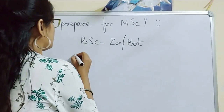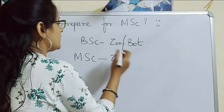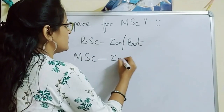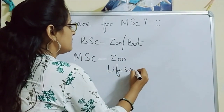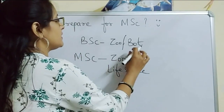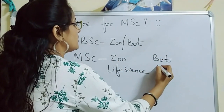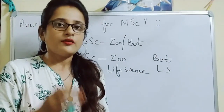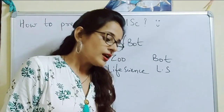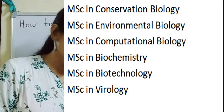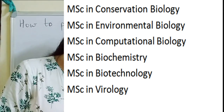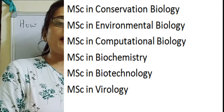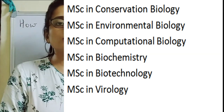If you have done BSc in geology, you can do MSc in geology or life science. Similarly, if you have done BSc in botany, you can do MSc in botany or life science. Apart from these classical subjects, there are many other options such as MSc in conservation biology, environmental biology, computational biology, biochemistry, biotechnology, and virology.